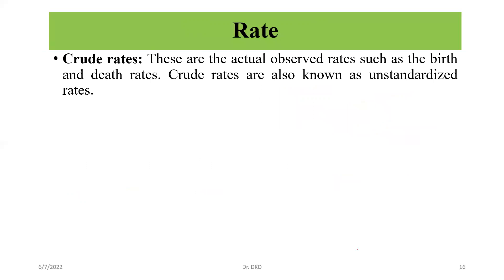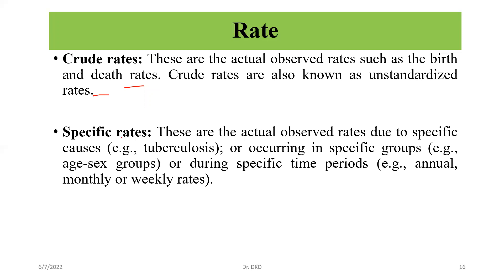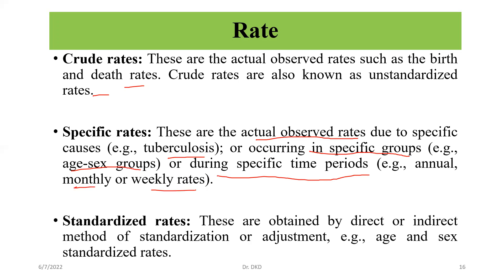We can say crude rates — these are the actual observed rates such as birth and death rates. Crude rates are also known as unstandardized rates. Specific rates are the actual observed rates due to specific causes, like tuberculosis, occurring in specific groups such as age groups, or during specific time periods like annual, monthly, or weekly rates. Standardized rates are obtained by direct or indirect methods of standardization and adjustment, for example, age and sex standardized rates.